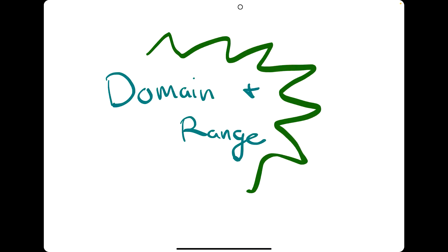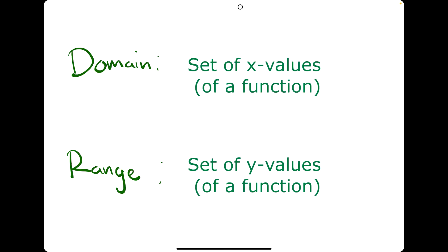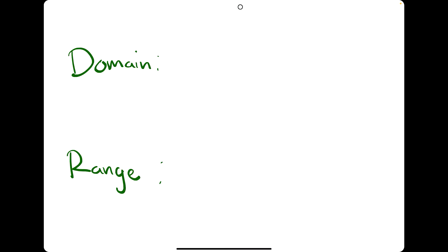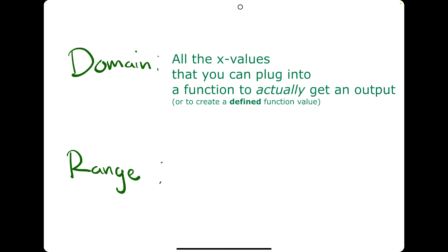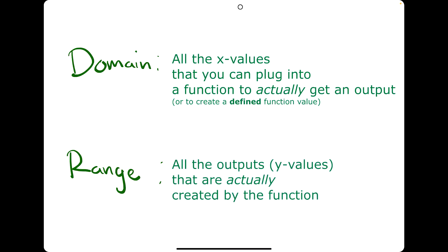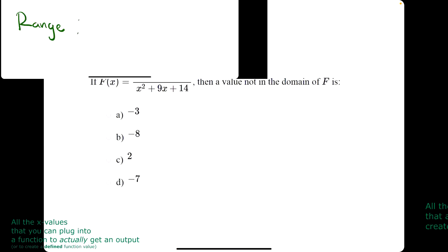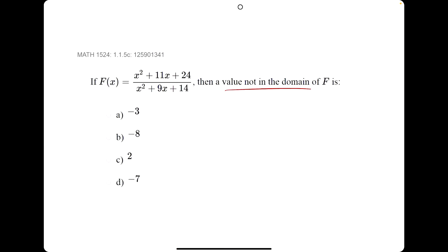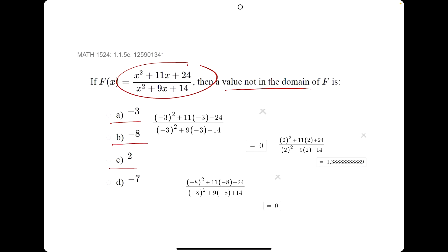Domain and range. Domain is the set of x values and range is the set of y values. More specifically, the domain is all the x values that you could plug into a function to actually get an output, and all the outputs that are actually created by the function is the range. For example, in this problem where they're looking for an x value not in the domain, when we plug in negative 3, negative 8, and 2 to this function, they should all give us output values.